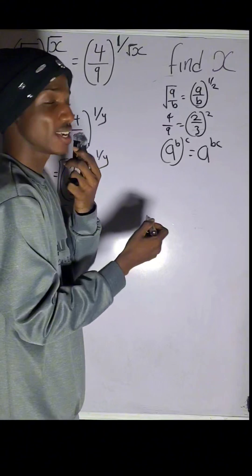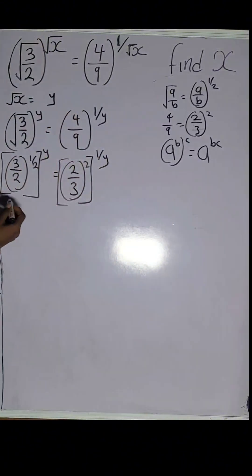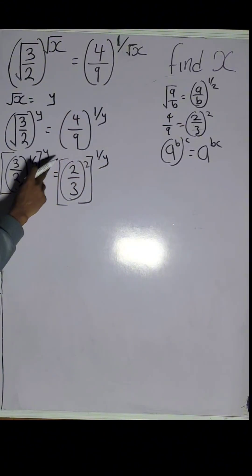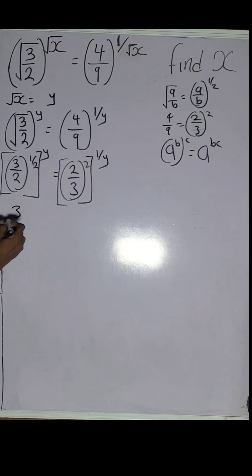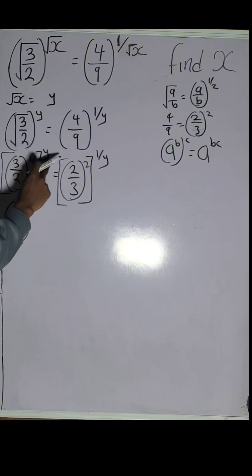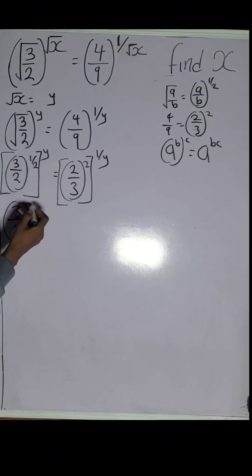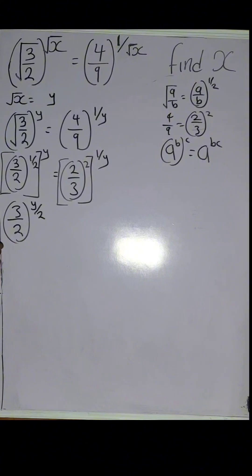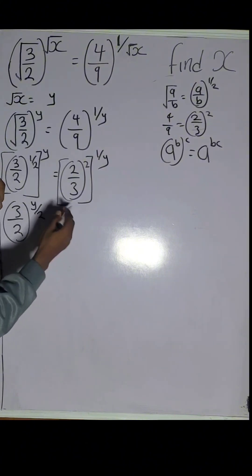So 3 over 2 raised to the power of 1 over 2, to the power of y, can be written as 3 over 2 raised to the power of 1 over 2 times y — that is y over 2. This will equal 2 over 3 raised to the power of 2 times 1 over y, which is 2 over y.